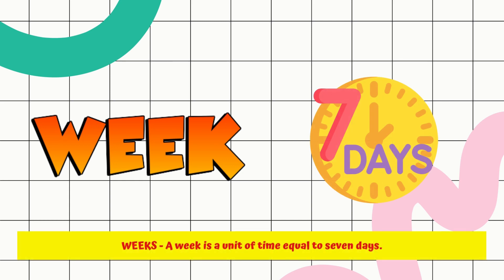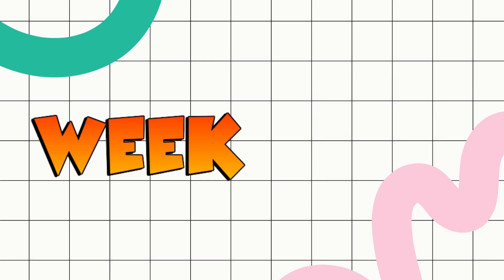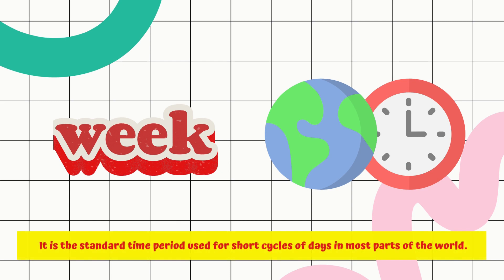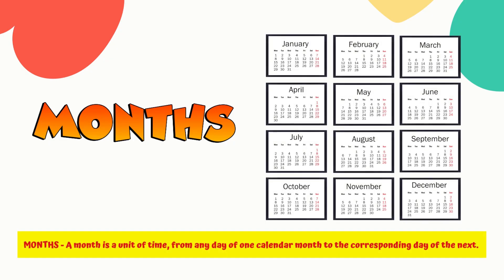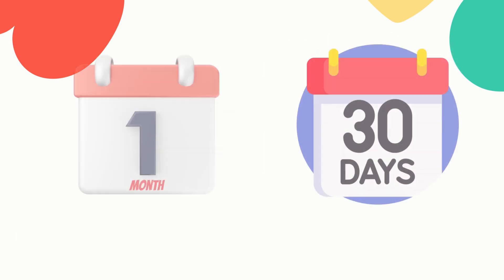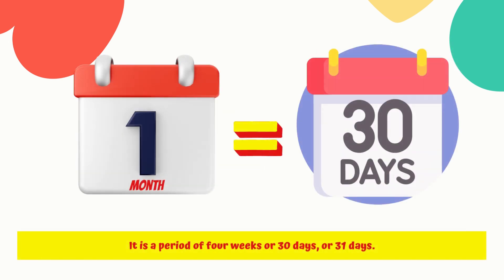A week is a unit of time equal to 7 days. It is the standard time period used for short cycles of days in most parts of the world. A month is a unit of time from any day of one calendar month to the corresponding day of the next — a period of 4 weeks, or 30 or 31 days.